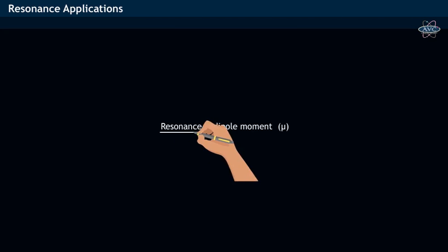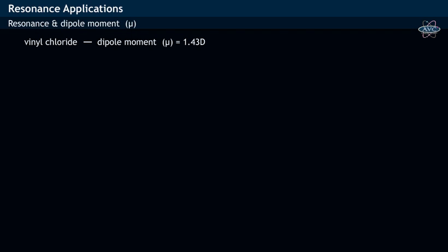Resonance and dipole moment. Vinyl chloride has got a dipole moment of 1.43 debye. In vinyl chloride,